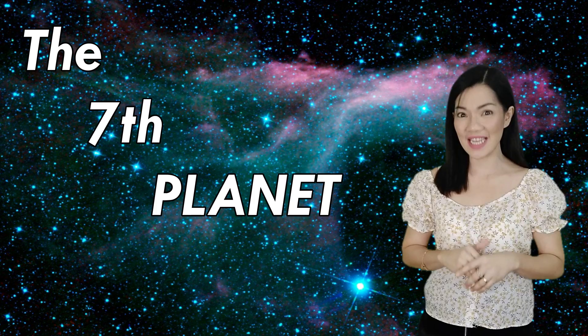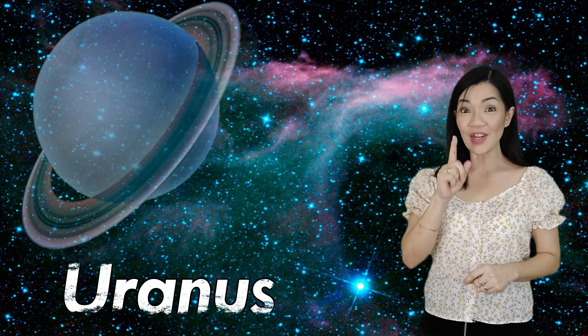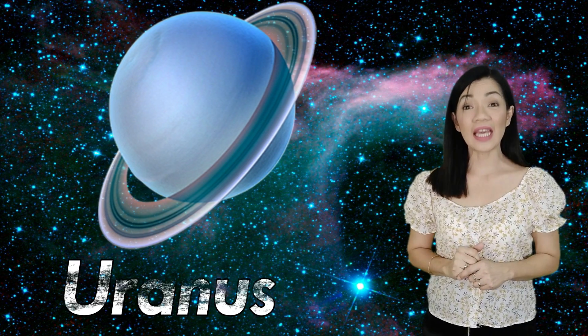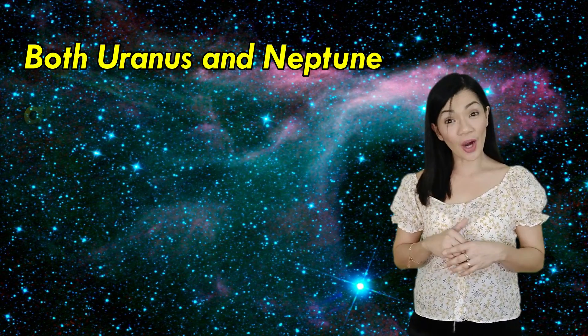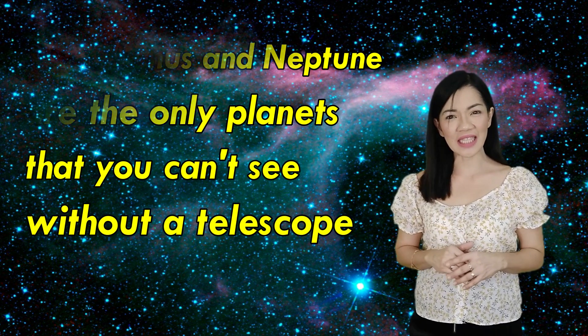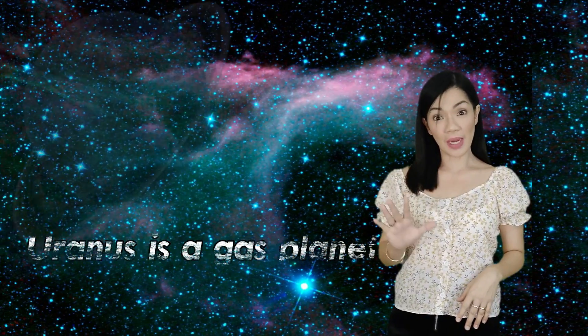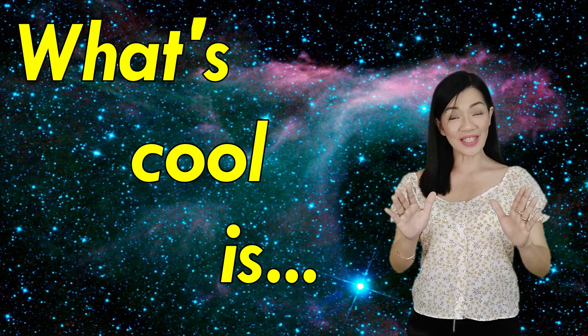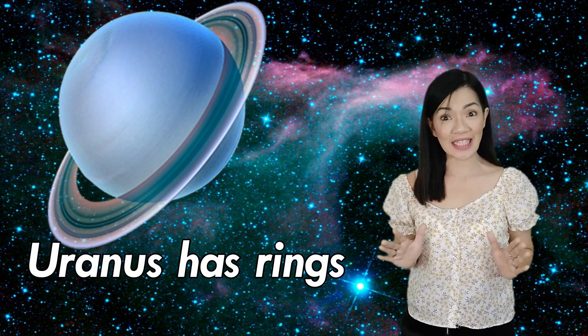The seventh planet is Uranus. Another gas planet. Yes! Planet number seven is Uranus. It's in between Saturn and Neptune. Both Uranus and Neptune are the only planets you can't see without a telescope. So, it took a while for them to be discovered. Uranus is a gas planet that is made of gas and liquid. What's cool is, Uranus has rings just as Saturn has rings.